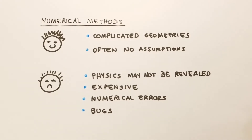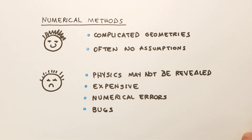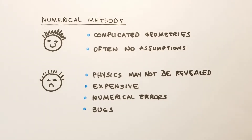Numerical methods also have advantages and disadvantages. The advantages of numerical methods are that we can study more complicated geometries, such as geometries of systems that appear in industrial settings. We can also solve the heat-conduction equations in their entirety, so we don't have to rely on assumptions.